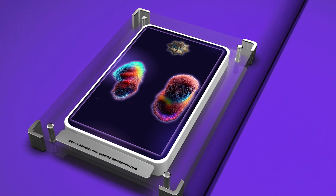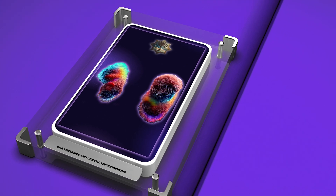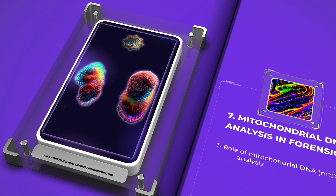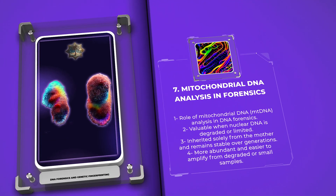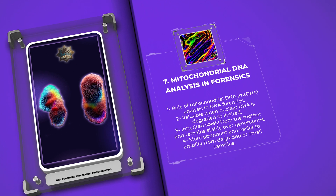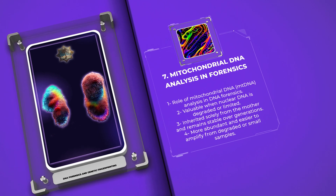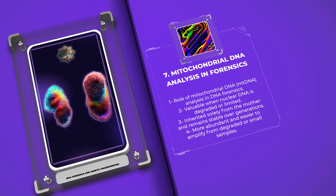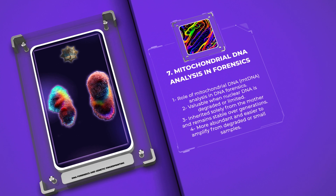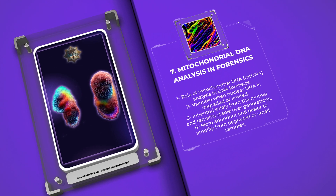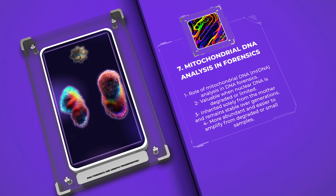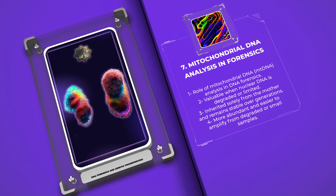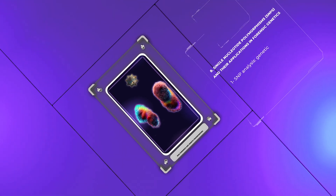In this section on DNA forensics, we will explore the role of mitochondrial DNA analysis. While nuclear DNA is commonly used, mitochondrial DNA (mtDNA) analysis can be valuable when nuclear DNA is degraded or limited. mtDNA is inherited solely from the mother and remains stable over generations. It is more abundant and easier to amplify from degraded or small samples like hair, bones, or teeth. However, mtDNA has limited power for precise individual identification.